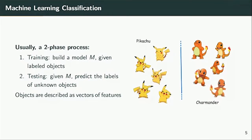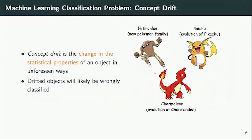Ideally we would like to identify the best separating line or hyperplane in multi-dimensions that sets the two classes apart. The problem is that in a non-stationary context, we have objects whose statistical properties change over time in unforeseen ways.